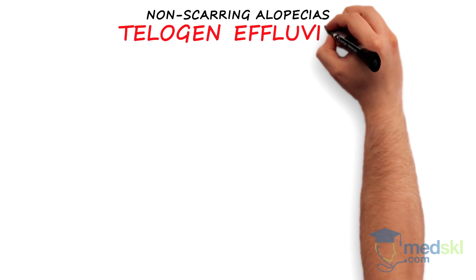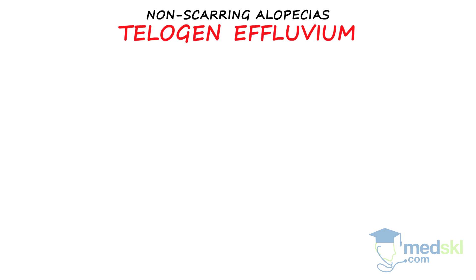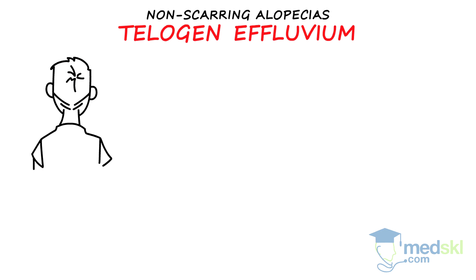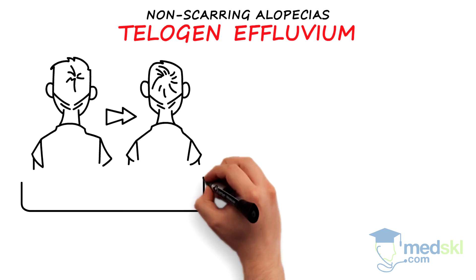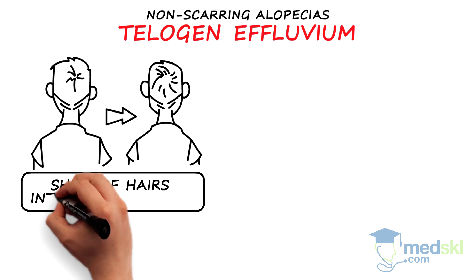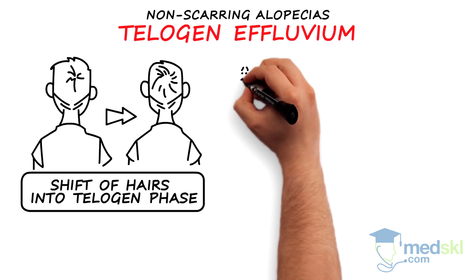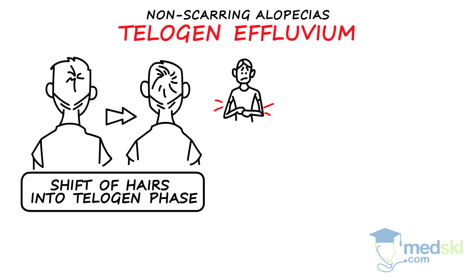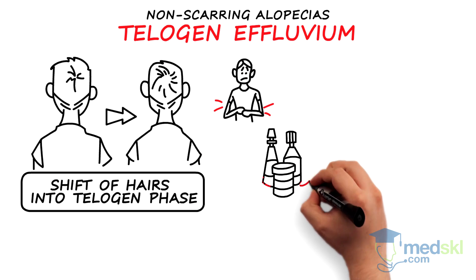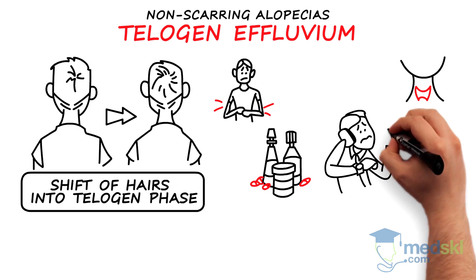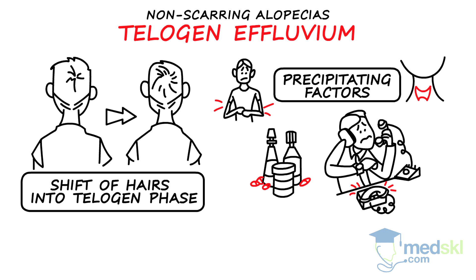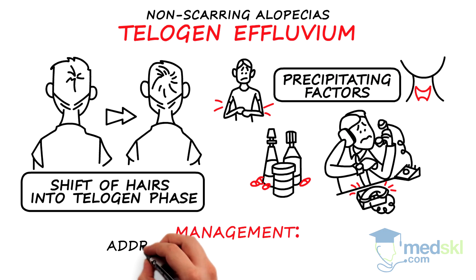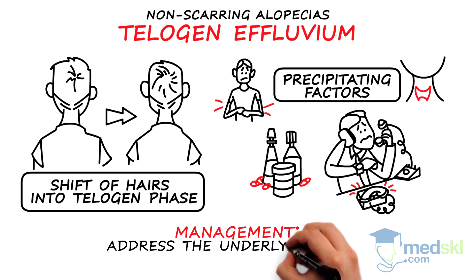Telogen effluvium is characterized by increased hair shedding and reduced hair density resulting from increased numbers of hair shifting into a resting or telogen phase. Malnutrition, medications, endocrine abnormalities, and stress precipitate this shift. Management should address the underlying cause.